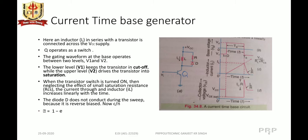The second circuit is the current time-base generator. In this circuit, the transistor is used with a coil, and a diode and resistors are connected across the coil. When VCC supply is given to the transistor, Q1 operates as a switch, and the gating voltage applied at the base of the transistor is between voltage levels V1 and V2.